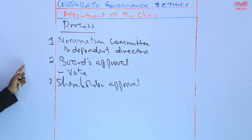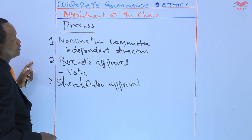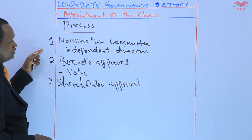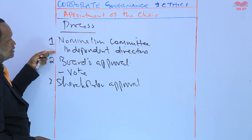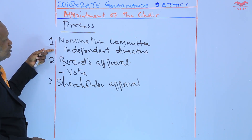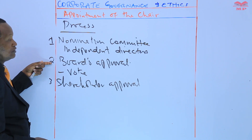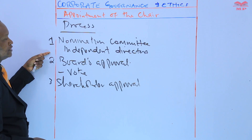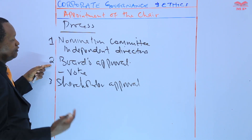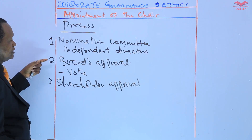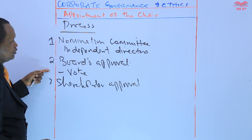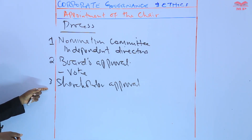So these are three key steps in the process of appointing the chair of a board of directors. One: the nomination committee, comprising independent directors, is responsible for the identification and evaluation of potential candidates. Two: this committee presents its recommendation to the full board for approval, which then votes on the submitted name. Three: in some instances, the individual approved by the board may also require shareholders' approval.